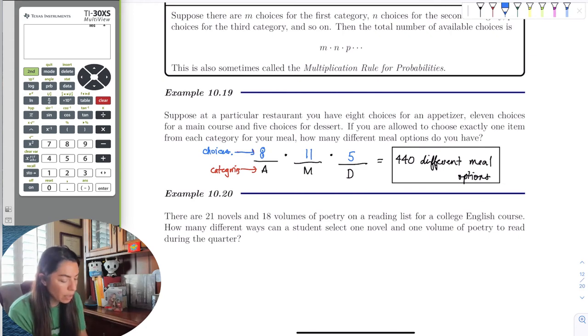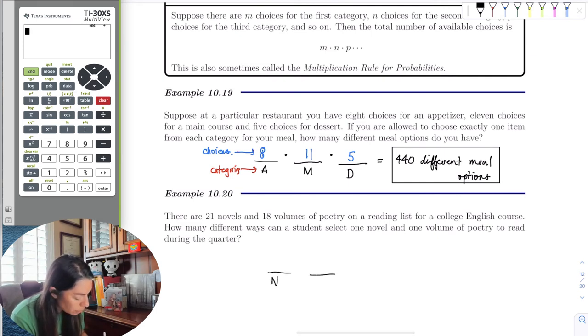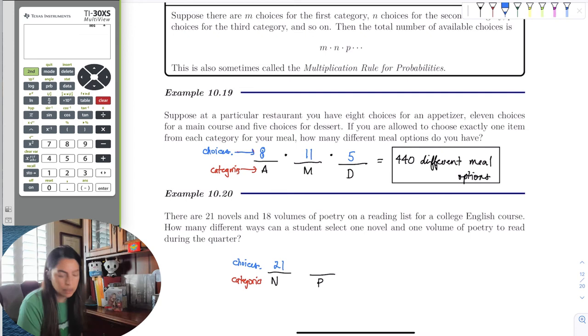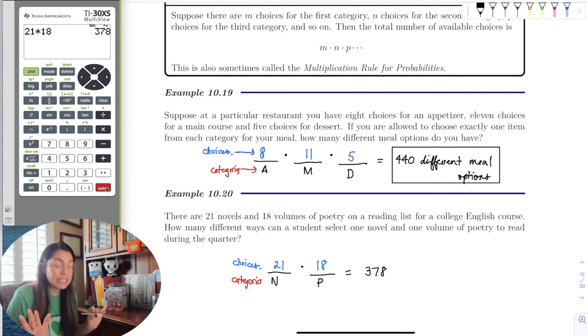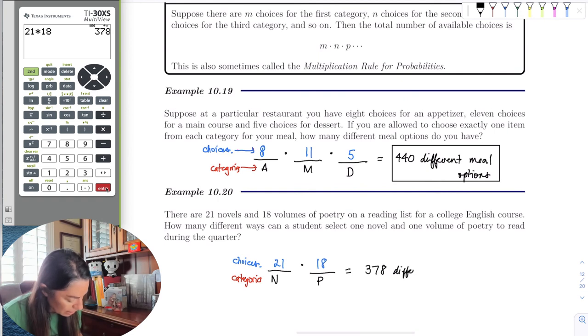For example, if I have 21 novels and 18 volumes of poetry on a reading list for a college English course, how many different ways can a student select one novel and one volume of poetry? Once again, we put it in the categories. We have novels and then poetry. We have categories on the bottom and then our choices on top. How many choices of novels do we have? That's right, 21. And how many choices for poetry? 18. Multiplication rule, we can multiply these. We can put this in the calculator if we don't know 21 times 18 by heart, which I don't. And we get 378. So there are 378 ways to select readings.